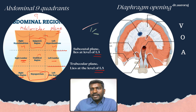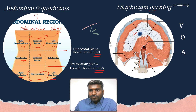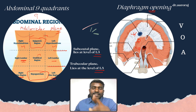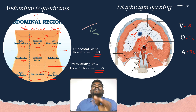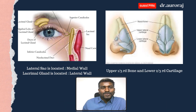For diaphragm openings, remember the mnemonic VOA: V for vena cava, O for esophagus, A for aorta. Vena cava is at T8, esophagus at T10, and aorta at T12. Remember the aortic opening transmits the aorta, the thoracic duct, and the azygos vein.